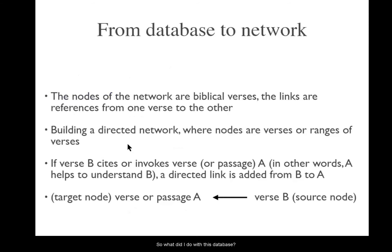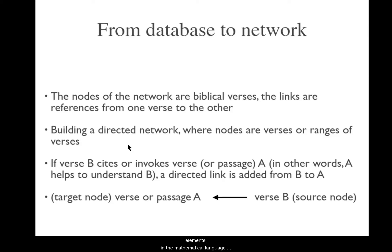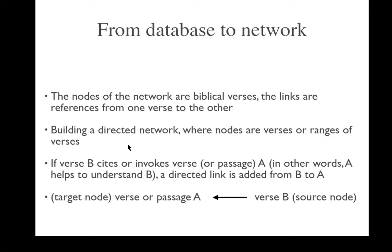So what did I do with this database? How did I go from database to network? A network is a mathematical object of nodes and links. The nodes — or vertices in mathematical language — are the fundamental elements being connected by links, which are called arcs. To build this network, I took the verses of the Bible as the nodes. Sometimes there were ranges of verses, and I connected them with those links or arcs.